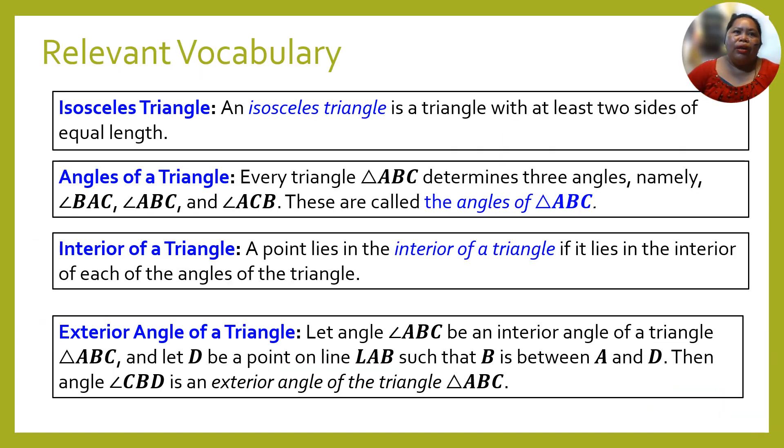We have the relevant vocabulary. We have isosceles triangle. An isosceles triangle is a triangle with at least two sides of equivalent length.